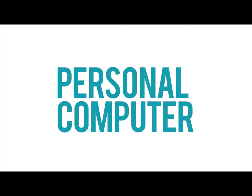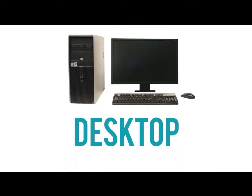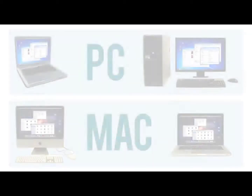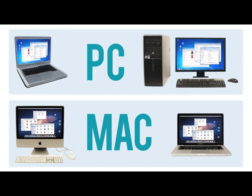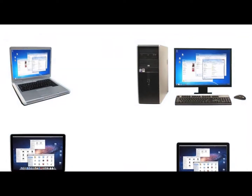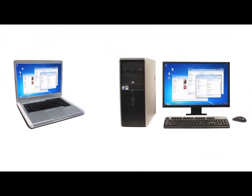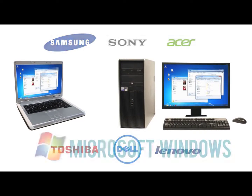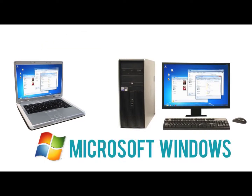When most people say 'computer,' they're talking about a personal computer. This can be a desktop computer or a laptop computer, which has basically the same capabilities but in a more portable package. Personal computers come in two main styles: PC and Mac. PCs are the most common type — there are many different companies that make them, and they usually come with the Microsoft Windows operating system.